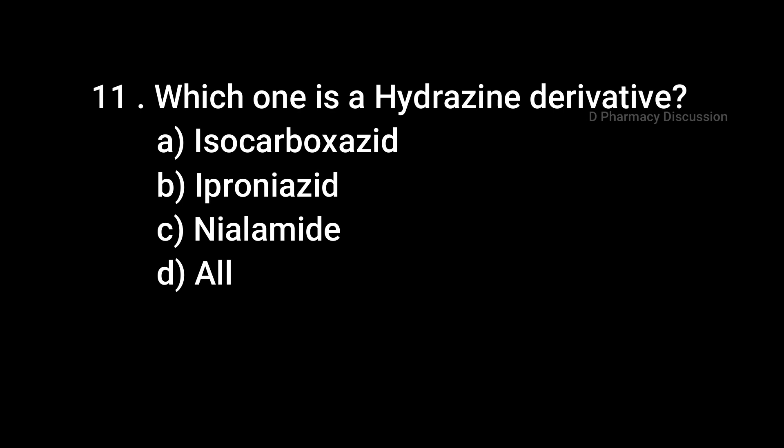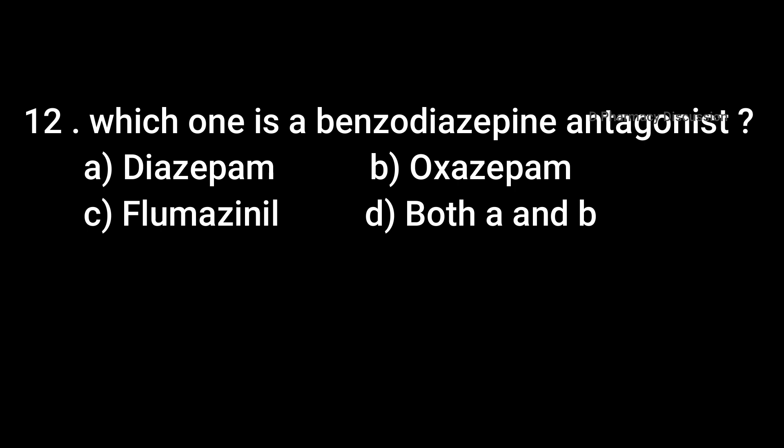Question 11: Which one is a hydrazine derivative? Option A: Isocarboxylside, B: Iproniazid, C: Nialamide, D: All. Correct answer is Option D: All. Question 12: Which one is a benzodiazepine antagonist? Option A: Diazepam, B: Oxazepam, C: Flumazenil, D: Both A and B. Correct answer is Option C: Flumazenil.